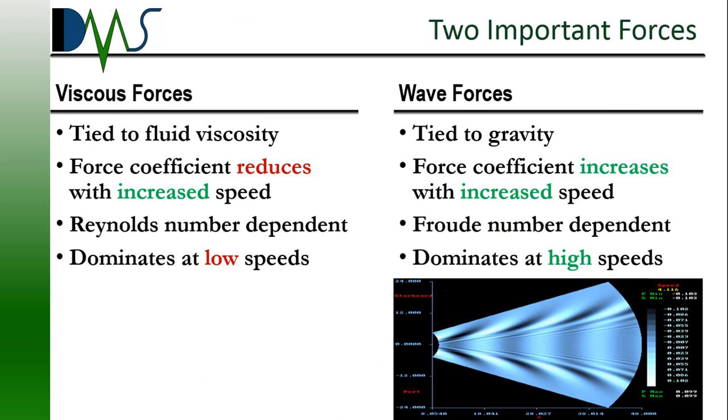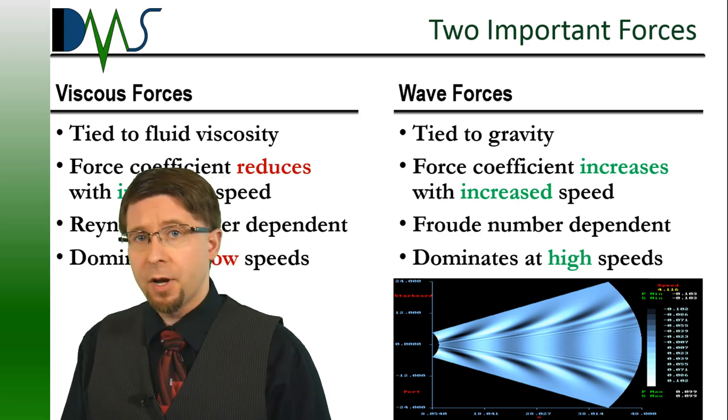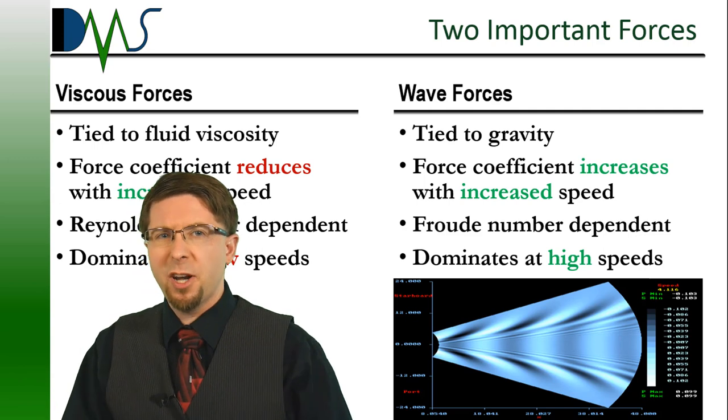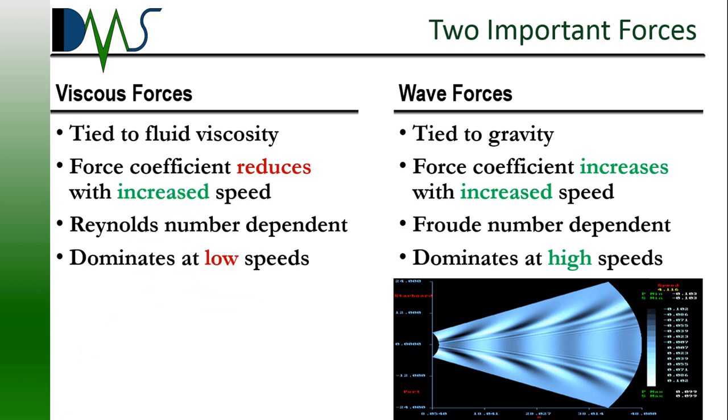The issues around model scaling arise because we need to scale two different forces. You see, ship resistance develops from two major forces. The viscous forces and waves. Now viscous forces are basically skin friction plus some flow interactions at the stern of the ship. The second category of forces comes from waves generated by the ship. But here's the catch. These two forces behave very differently.